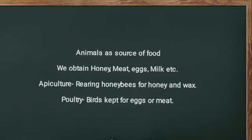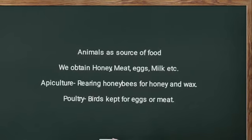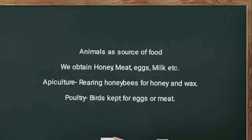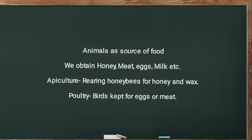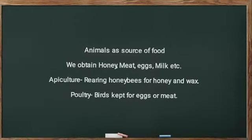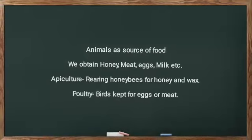We obtain honey, meat, and egg from animals. Apiculture is the rearing of honeybee for honey. Poultry is keeping birds for egg and meat.